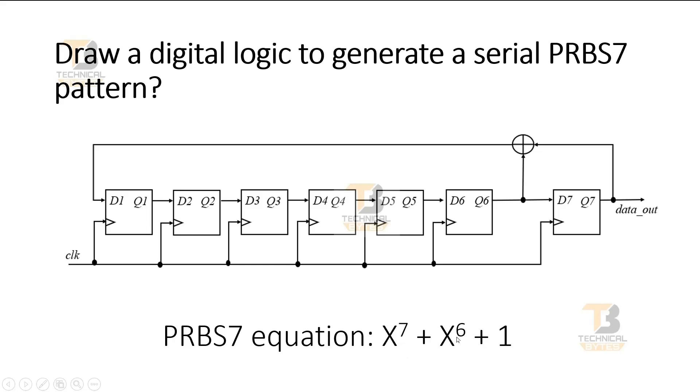X to the power 7 plus X to the power 6 plus 1. And this is the generator diagram. We tap 6th and 7th point, give them to the XOR, and XOR output is applied to the input of first flip-flop. So this is how we found the PRBS7 pattern generator.